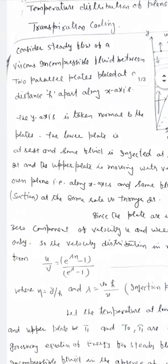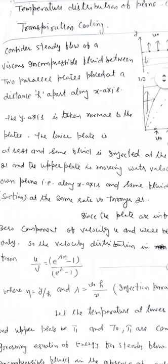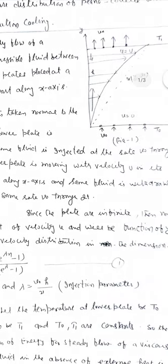Consider the steady flow of a viscous incompressible fluid between two parallel plates placed at a distance h apart along the x-axis. The y-axis is taken normal to the plates. The lower plate is at rest and fluid is injected at rate V0 through it. The upper plate is moving with velocity U in its own plane along the x-axis, and the same fluid is withdrawn by suction at the same rate V0 through it.